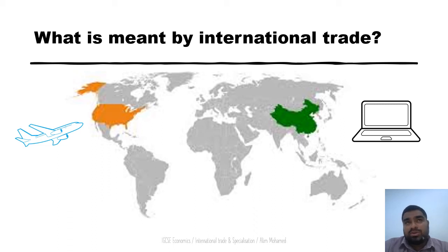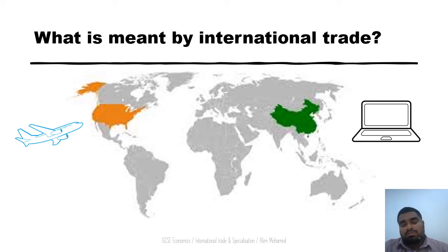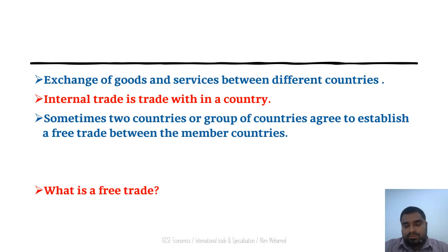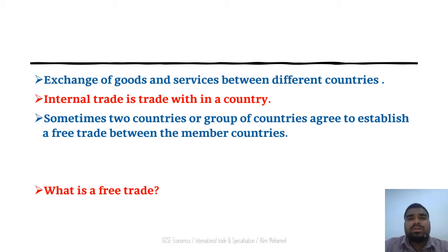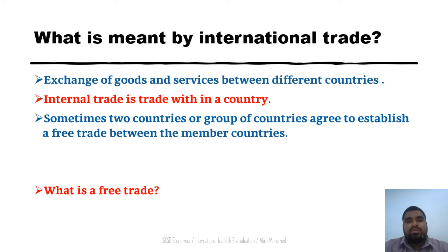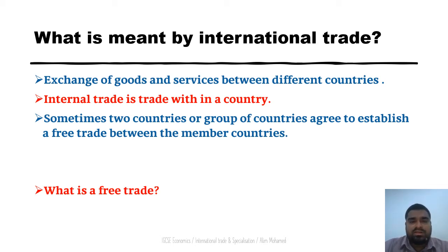For example, China and the US: if the US exports aircraft to China and China exports electronics to Europe, this is called international trade. In simple terms, it is the exchange of goods and services between different countries. There is also internal trade, which is trade within a country, as opposed to international trade between countries.